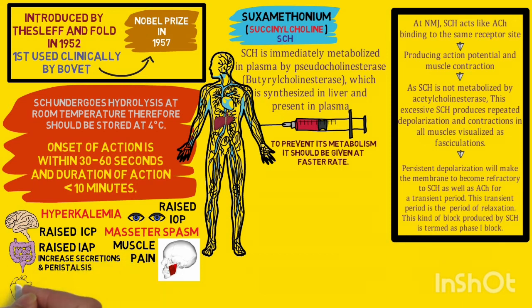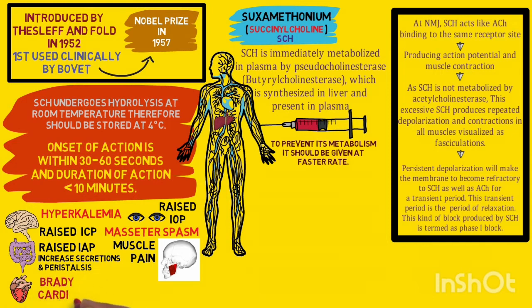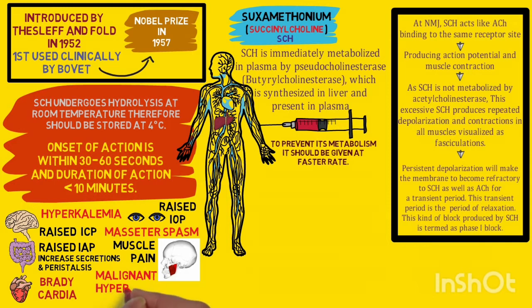In the cardiovascular system, succinylcholine not only acts on nicotinic receptors but also on muscarinic receptors, producing bradycardia. Excessive bradycardia can sometimes cause nodal rhythms. However, at very high doses, it may cause tachycardia due to stimulation of nicotinic receptors and sympathetic ganglia. It is important to note that succinylcholine is one of the most commonly implicated drugs in malignant hyperthermia, and like any other drug, anaphylaxis is always a possibility.